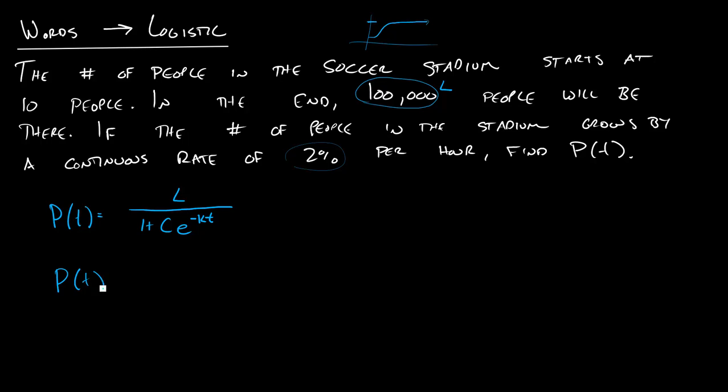So what we know for sure is that we have an L on top of 100,000. And then we have a K on the bottom, we don't know C yet, but we do know that K is .02. And notice the negative gets left there from the original equation.